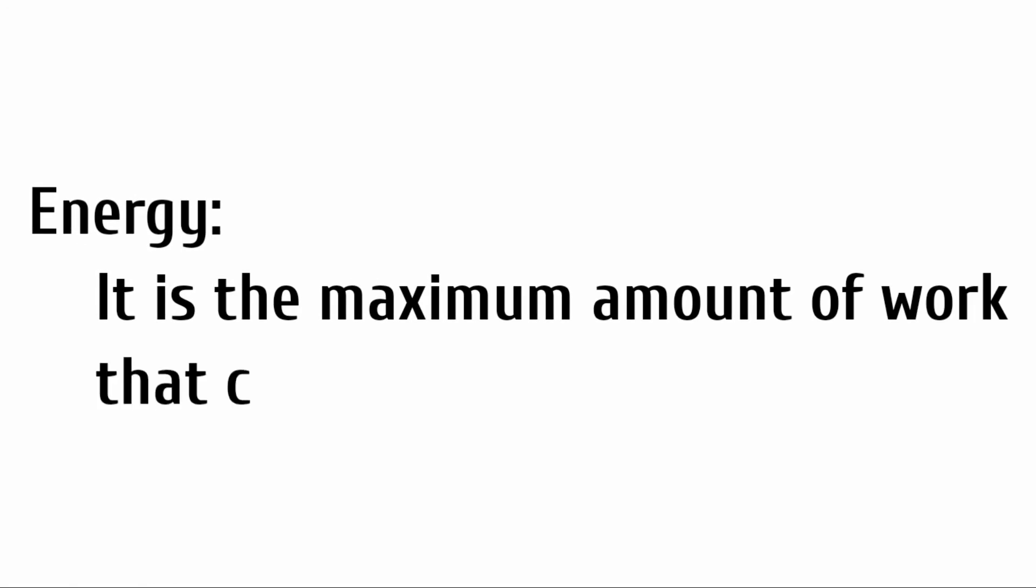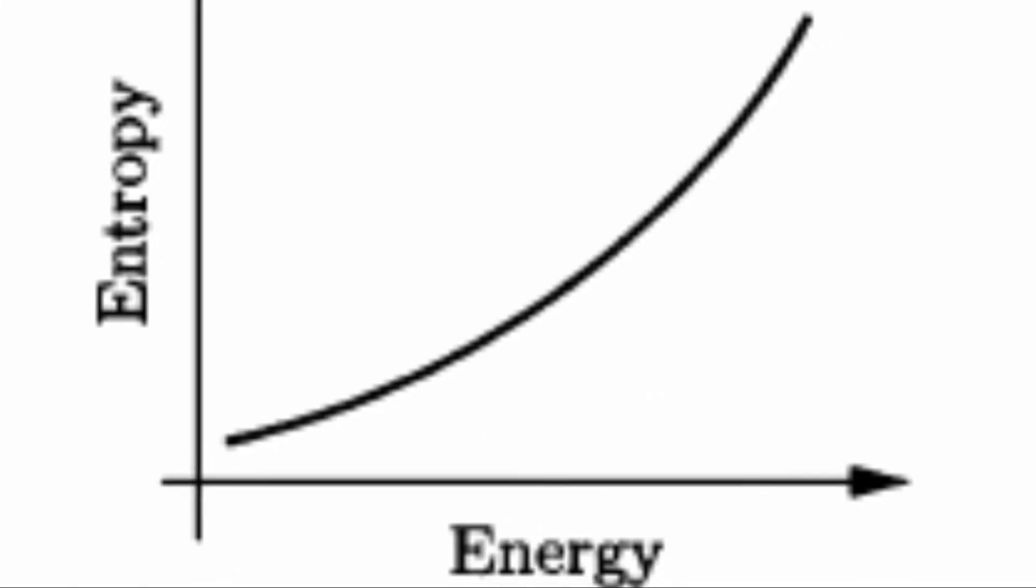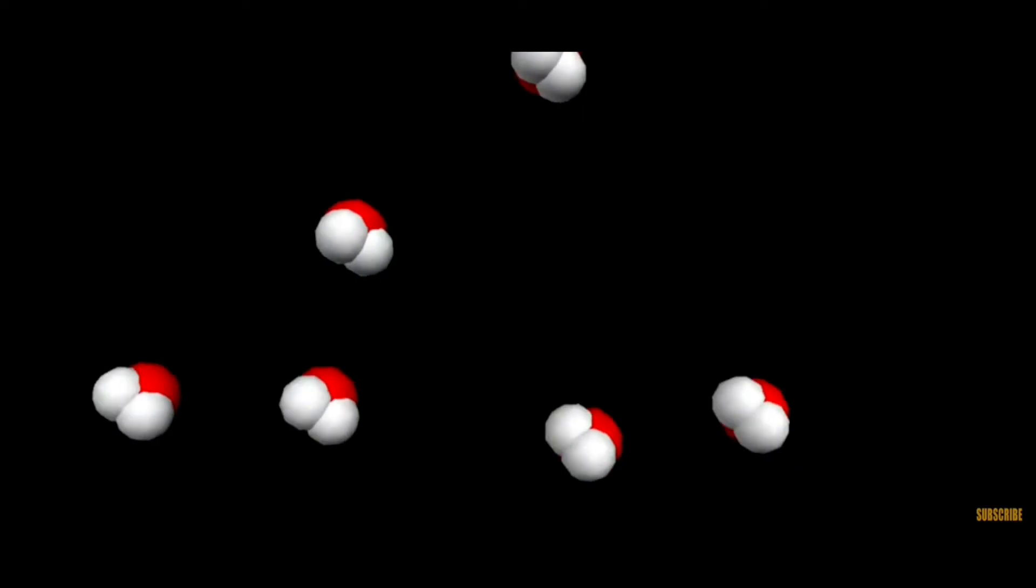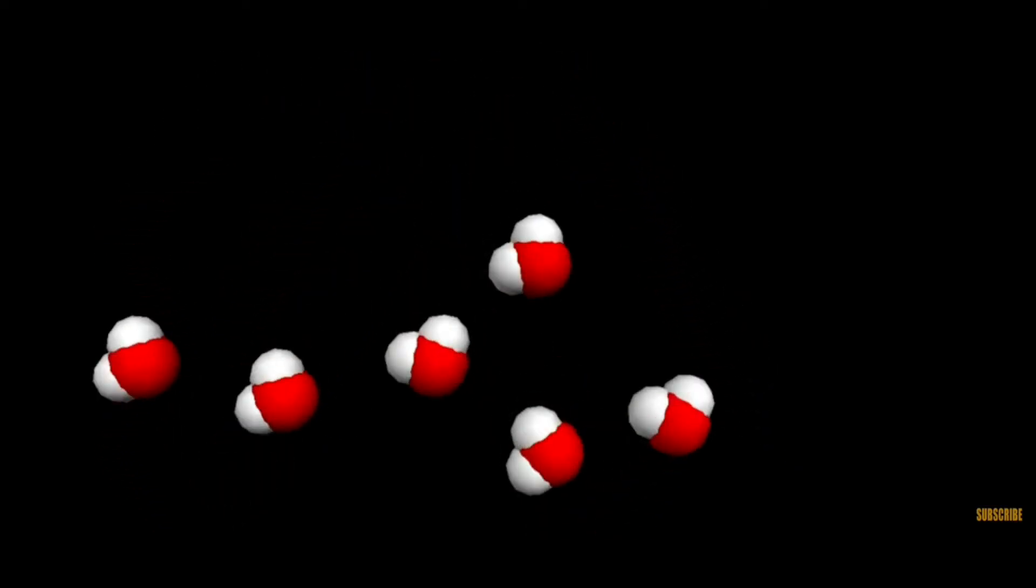If entropy is the measure of randomness, then how does the energy of the system affect it? Energy is just the amount of stuff that can happen. And if that amount of stuff increases, automatically the amount of ways the stuff could happen or the number of ways the molecules in the system could interact could increase.